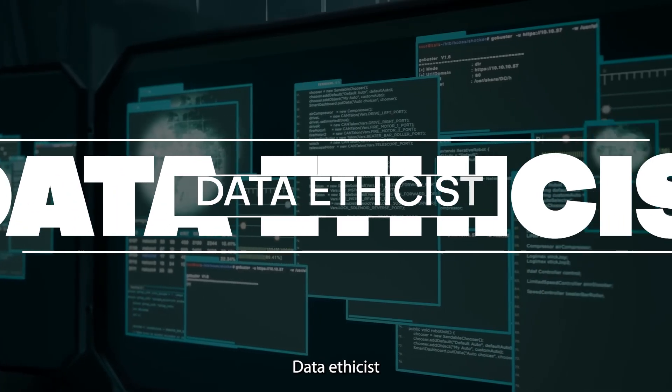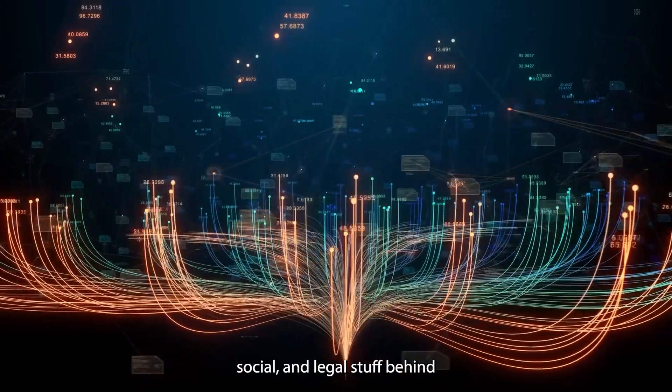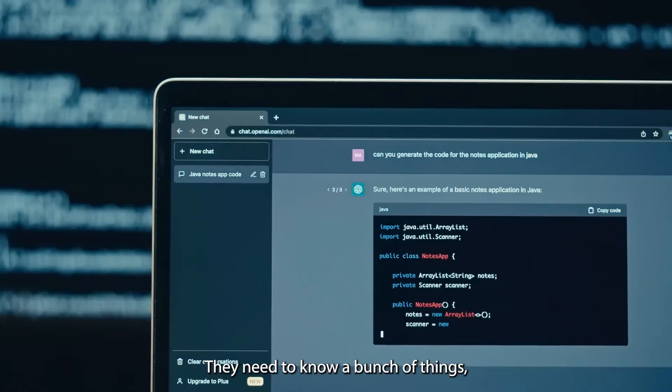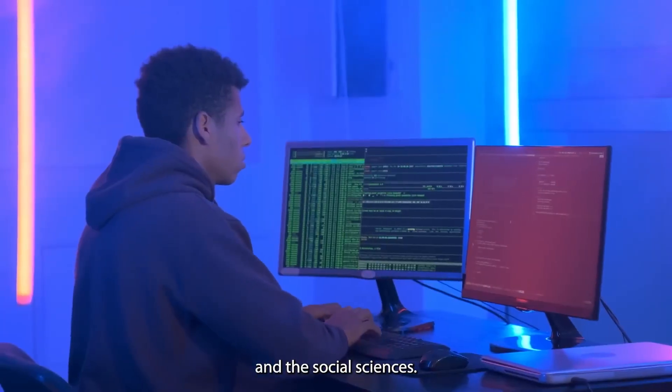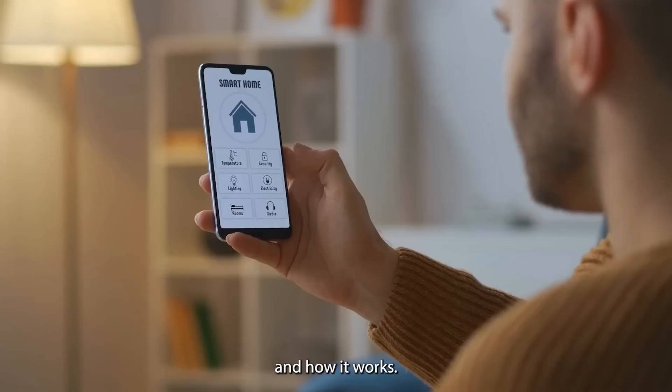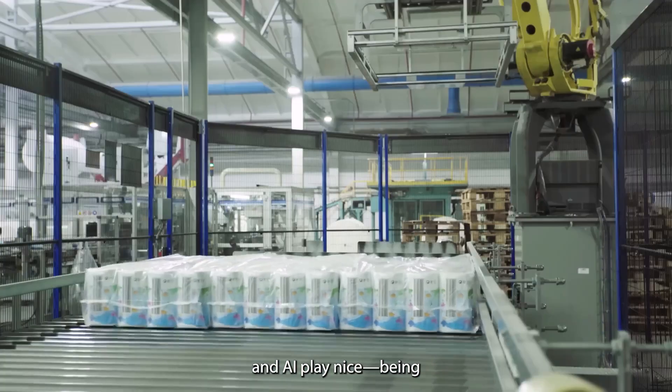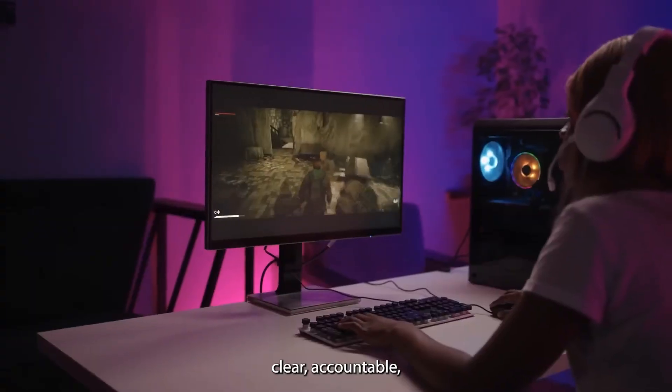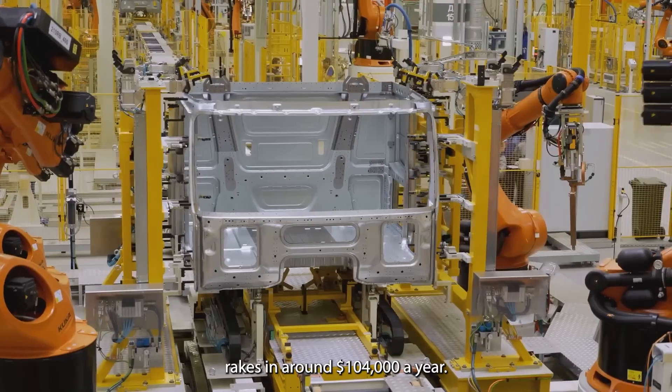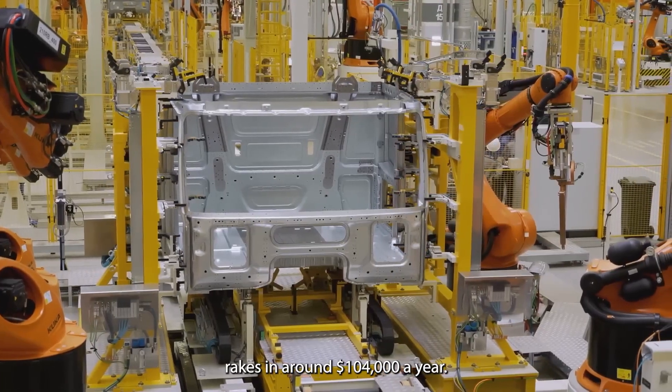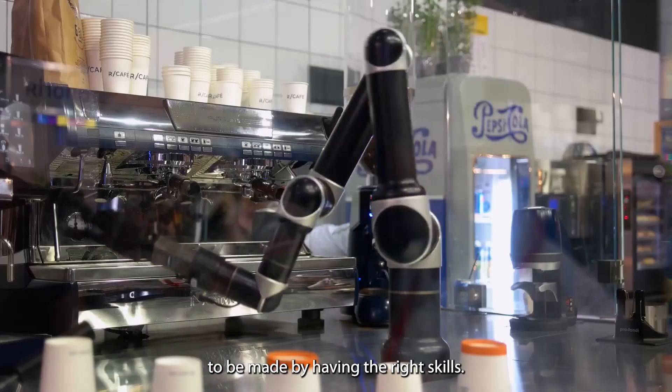Number two, data ethicist. A data ethicist is someone who digs into the ethical, social, and legal stuff behind data and AI. They need to know a bunch of things, like ethics, philosophy, law, and the social sciences. Plus, they should get the gist of AI and how it works. Their job is to set up and follow rules to make sure data and AI play nice, being fair, clear, accountable, and helpful to people and society. By the way, a data ethicist in the U.S. takes in around $104,000 a year. So if you have what it takes, there is a lot of money to be made by having the right skills.